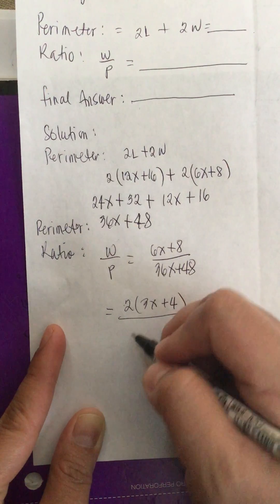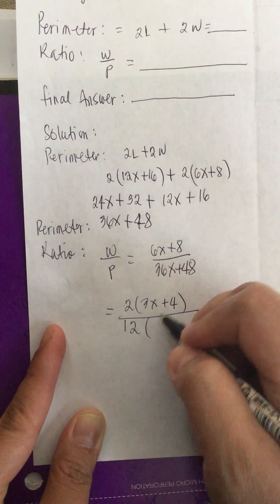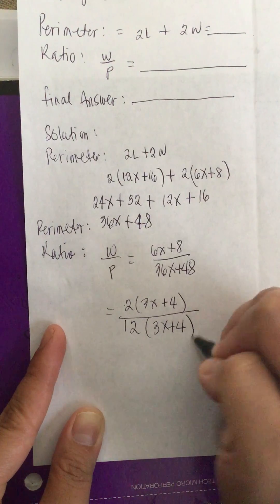From 36x plus 48, we factor out a 12. So it's 12 times 3x plus 4.